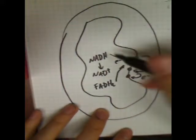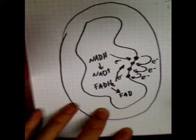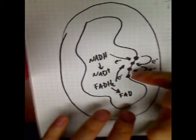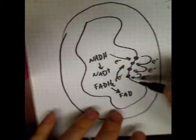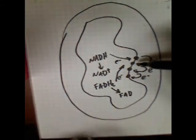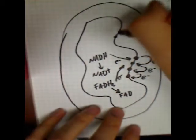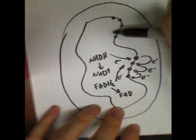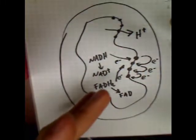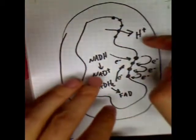FADH2 is also a high energy electron carrier, and it does the same thing — it gives an electron to the electron transport chain and reverts to its low energy state, FAD. These molecules in the electron transport chain, embedded in the inner membrane of the mitochondrion, pass the electron along as it loses energy. That energy is harvested and used by these molecules to pump H+ ions — protons — from the mitochondrial matrix into the intermembrane space.